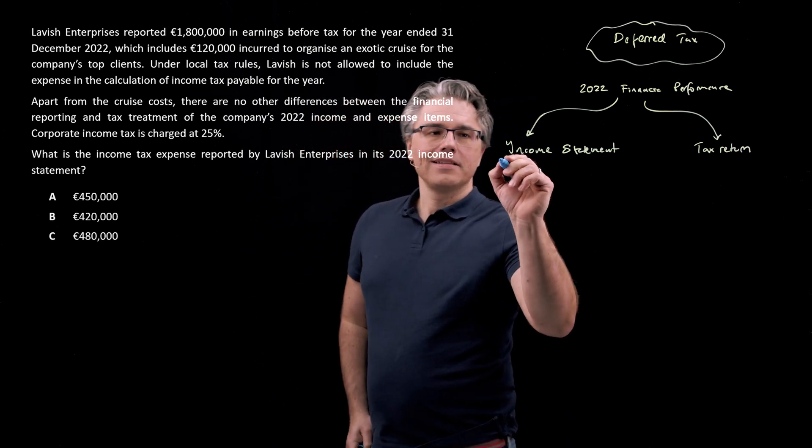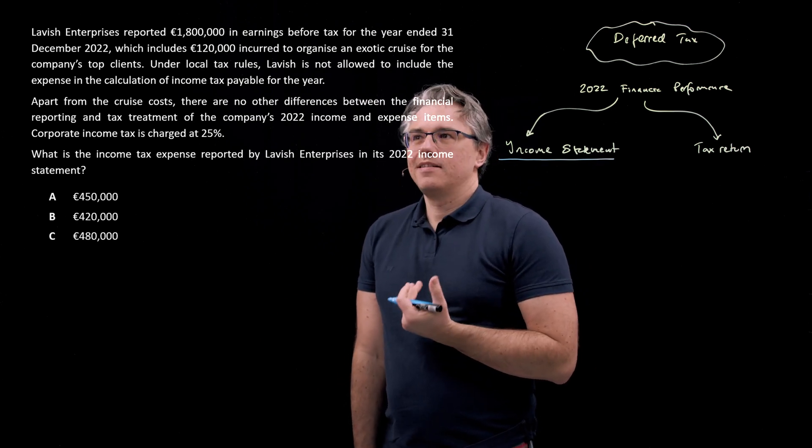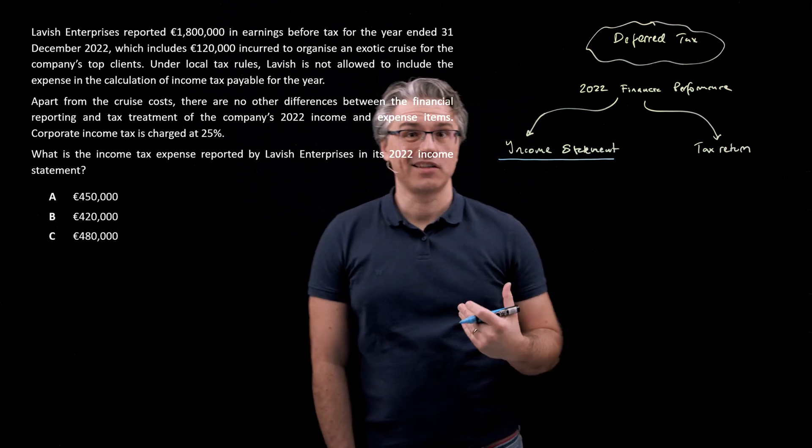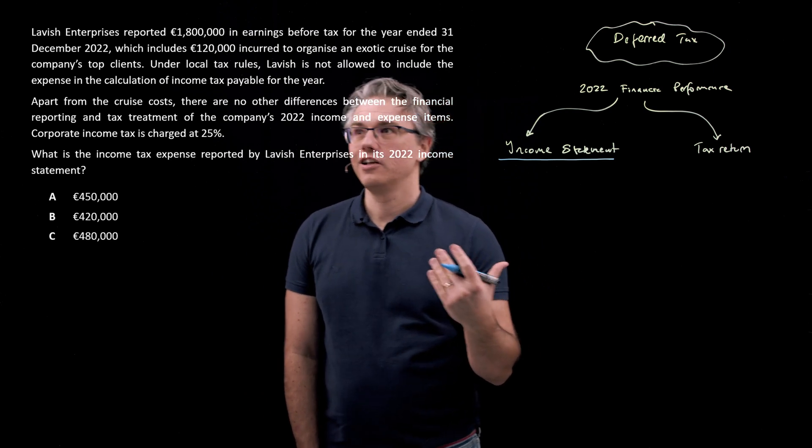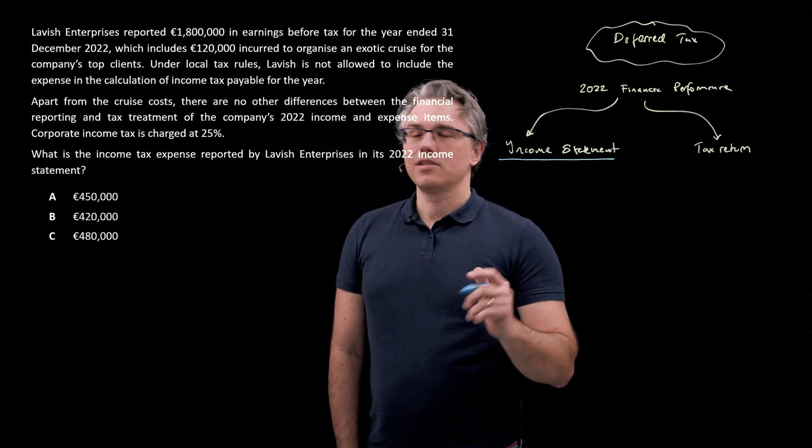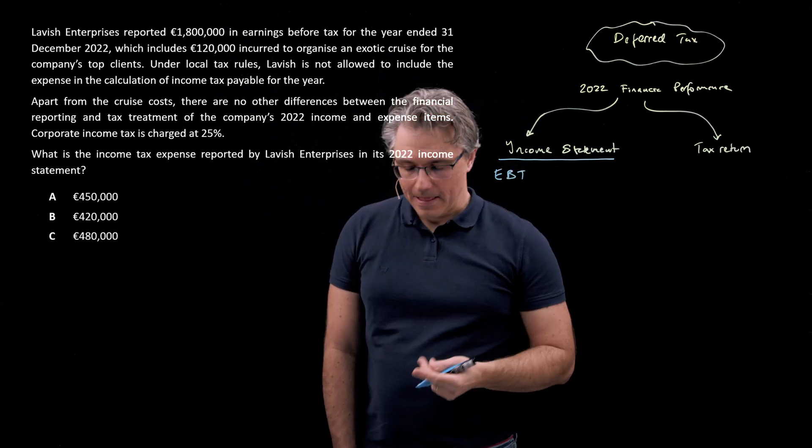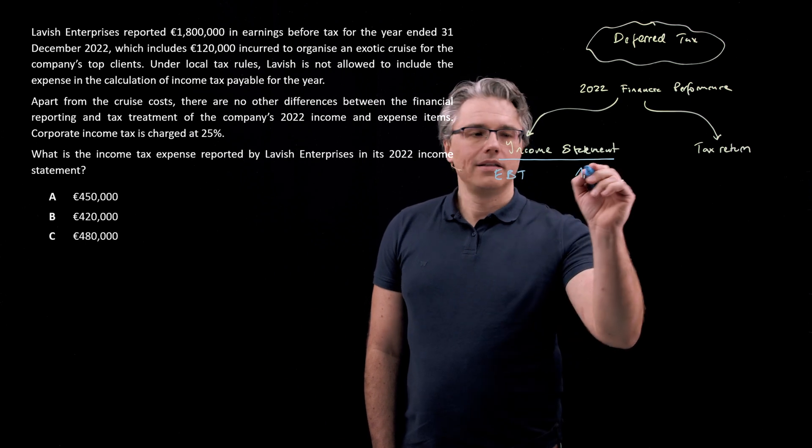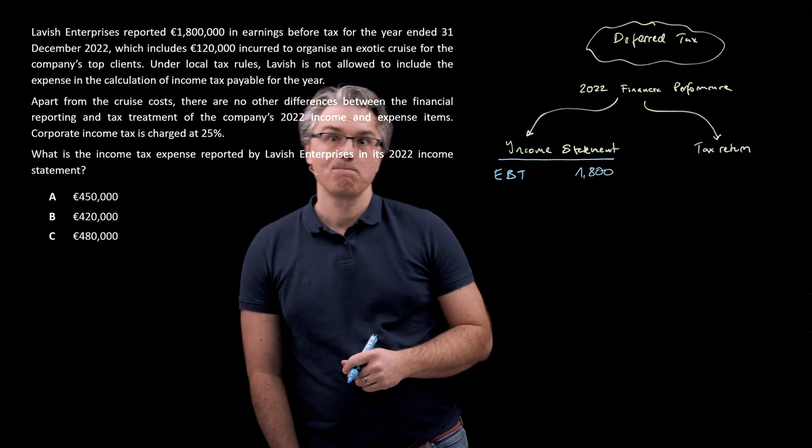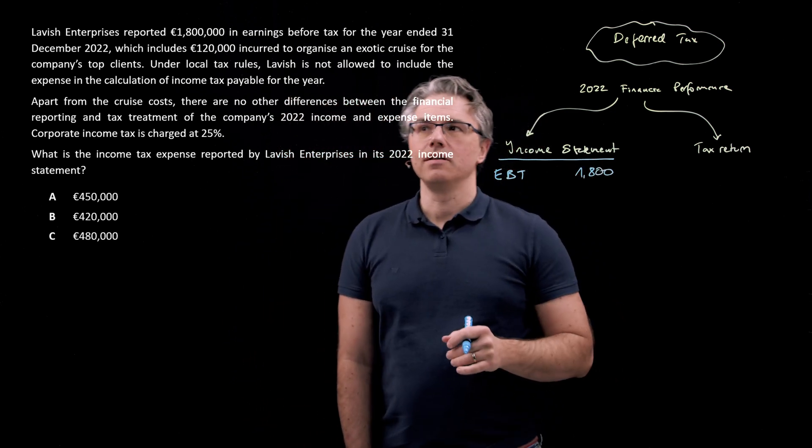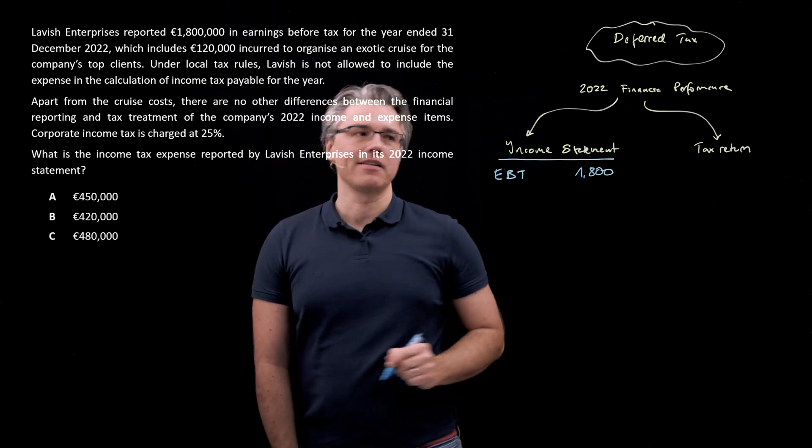From an income statement perspective, whether a certain expense is tax deductible or not doesn't really change the fact that you incurred it. So you have to report it within your income statement. So I'm going to say earnings before tax are 1,800,000. So let's assume this is in thousands. And this obviously includes the deduction for 120,000 incurred in association with that cruise.